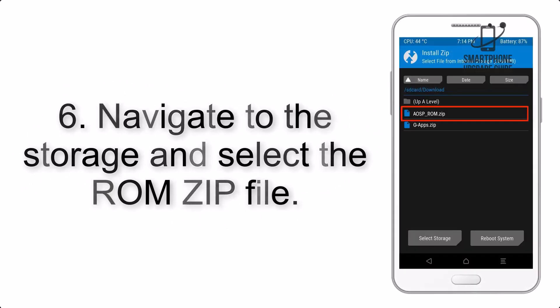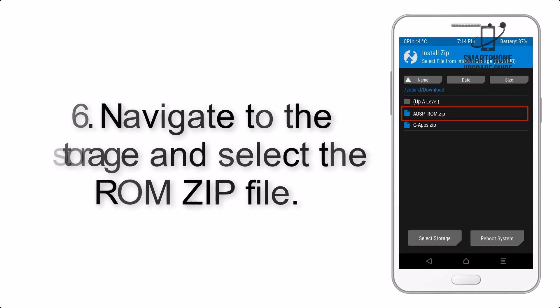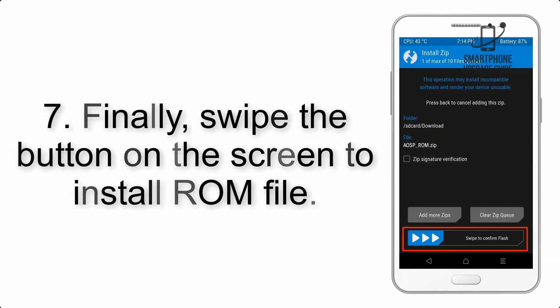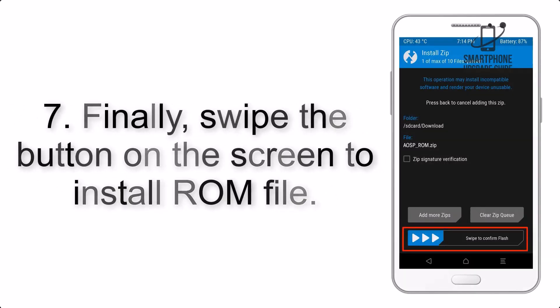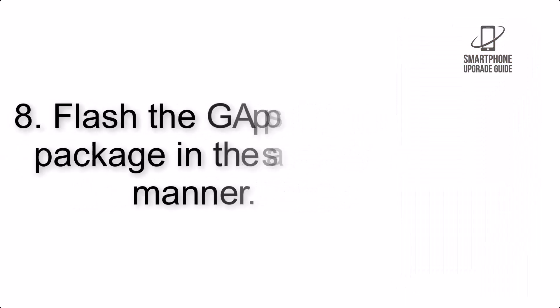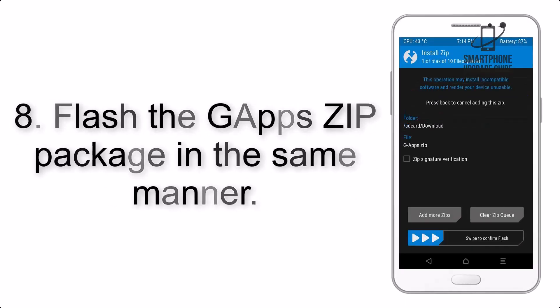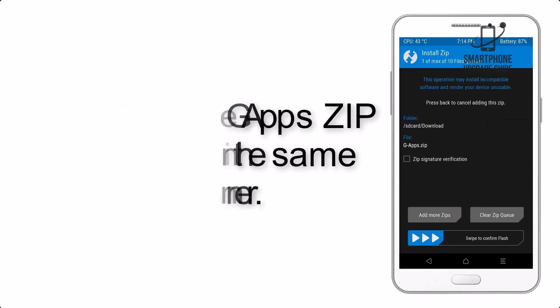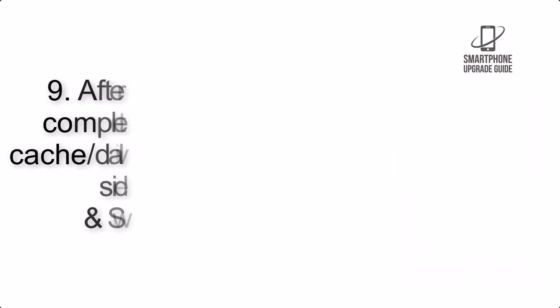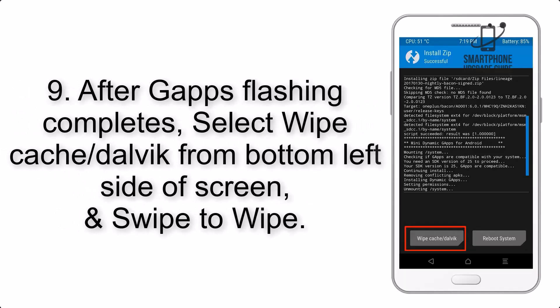Step 5: Go back to the recovery main screen and tap on the Install button. Step 6: Navigate to the storage and select the ROM zip file. Step 7: Finally, swipe the button on the screen to install the ROM file. Step 8: Flash the GApps zip package in the same manner.